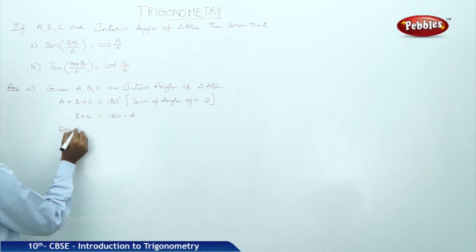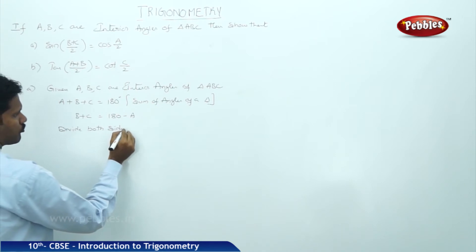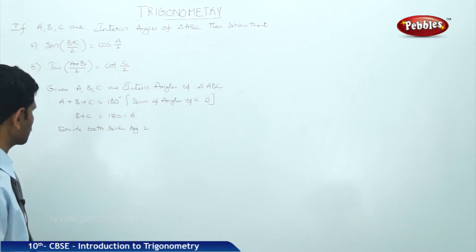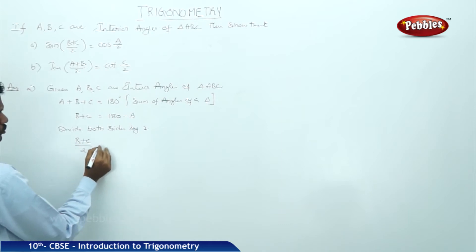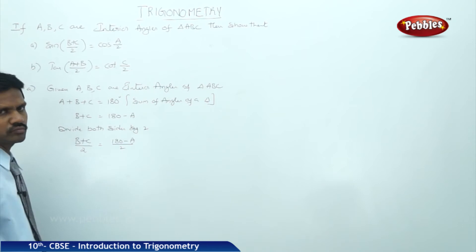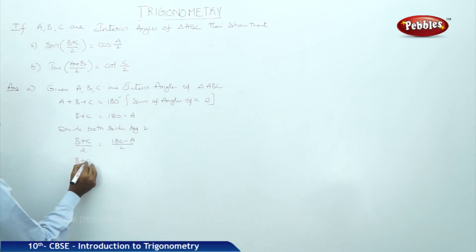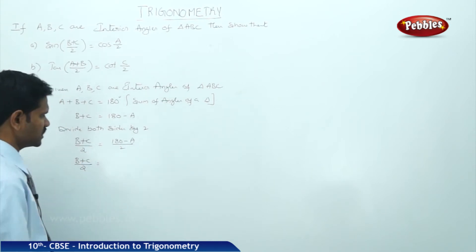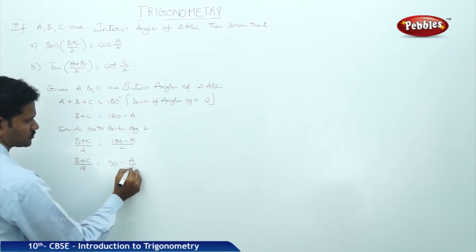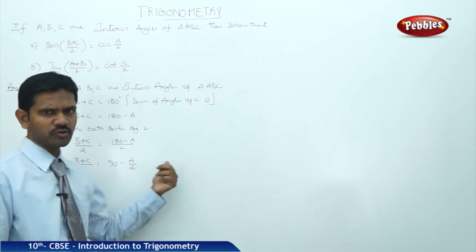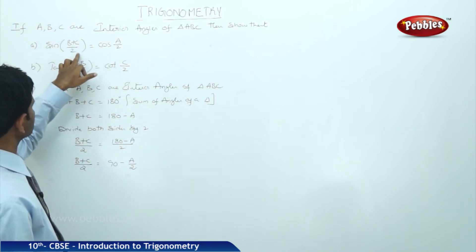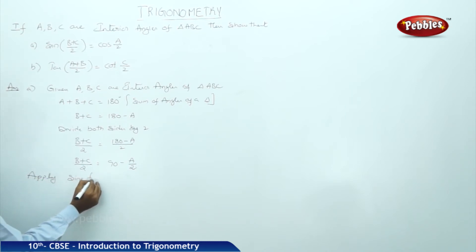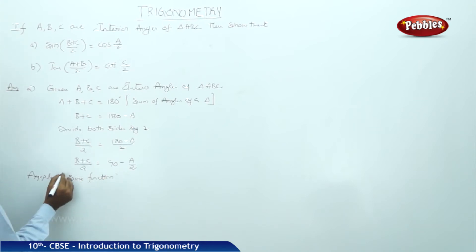Now divide both sides by 2, because B + C is divided by 2 in the question. Therefore, (B + C)/2 = (180 - A)/2. That is, (B + C)/2 = 90 - A/2. In the question, (B + C)/2 is associated with the sine function, so apply the sine function on both sides.